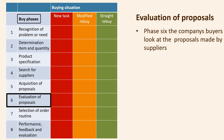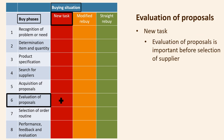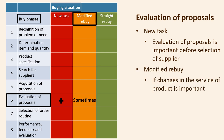Phase six is evaluation of proposals and selection of suppliers. In this phase, the company's buyers look thoroughly at the proposals made by the suppliers. For new purchases, evaluation of proposals is an essential step before the supplier is selected. In the case of a modified rebuy, if the change in the service or product is significant, there will be an assessment; otherwise, it will not be necessary.